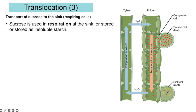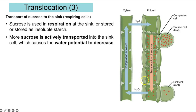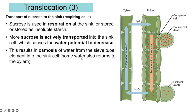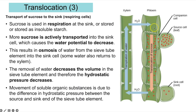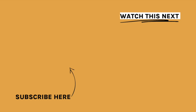At the sink cells, sucrose is converted into glucose and used in respiration, or stored as insoluble starch. More sucrose is actively transported into the sink cell, causing water potential to decrease, resulting in osmosis of water from the sieve tube elements to the sink cell; some water also returns to the xylem. Removal of water decreases the volume in the sieve tube element and therefore the hydrostatic pressure decreases. This gives the pressure gradient — high hydrostatic pressure at the source end, low at the sink end — so the solution moves en masse. That is topic 7 for Cambridge International A-level covering transport of water and sucrose in plants.